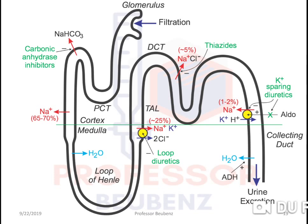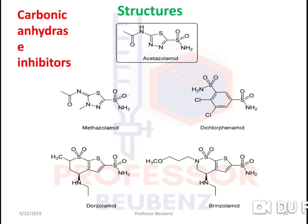This is the overview of all diuretics: carbonic anhydrase inhibitors, thiazide diuretics, potassium-sparing diuretics, and loop diuretics. Now we move to the chemistry and structures of each class.